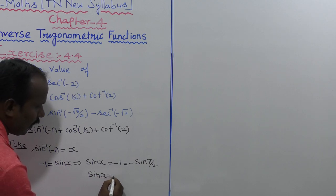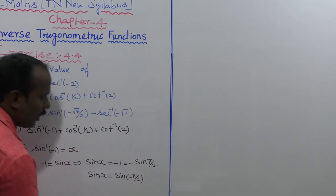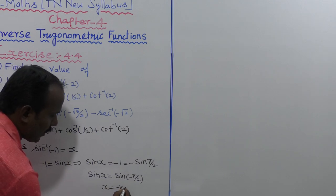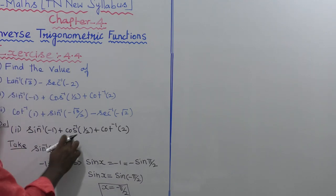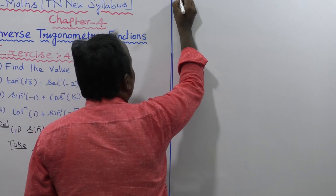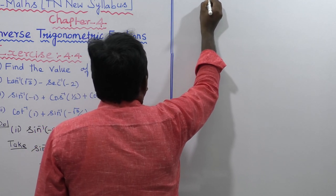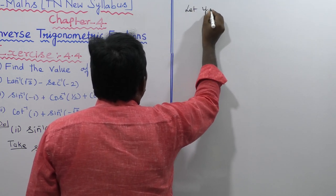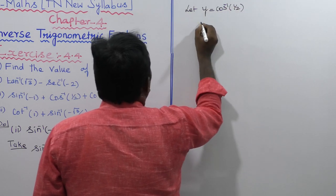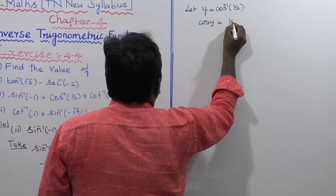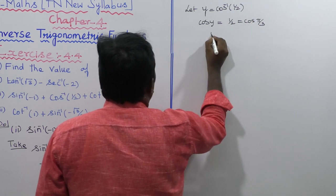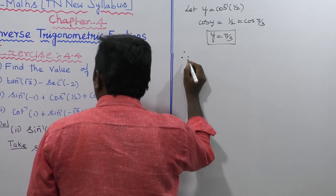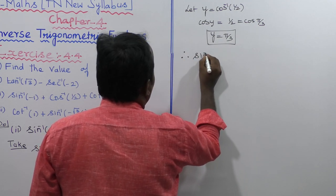sin x equals sin of minus pi by 2, so x equals minus pi by 2. That completes the first term. Next, cos inverse of 1 by 2: let y equal cos inverse of 1 by 2. Since cos of pi by 3 equals 1 by 2, y equals pi by 3. So the first term x equals minus pi by 2, and the second term y equals pi by 3.